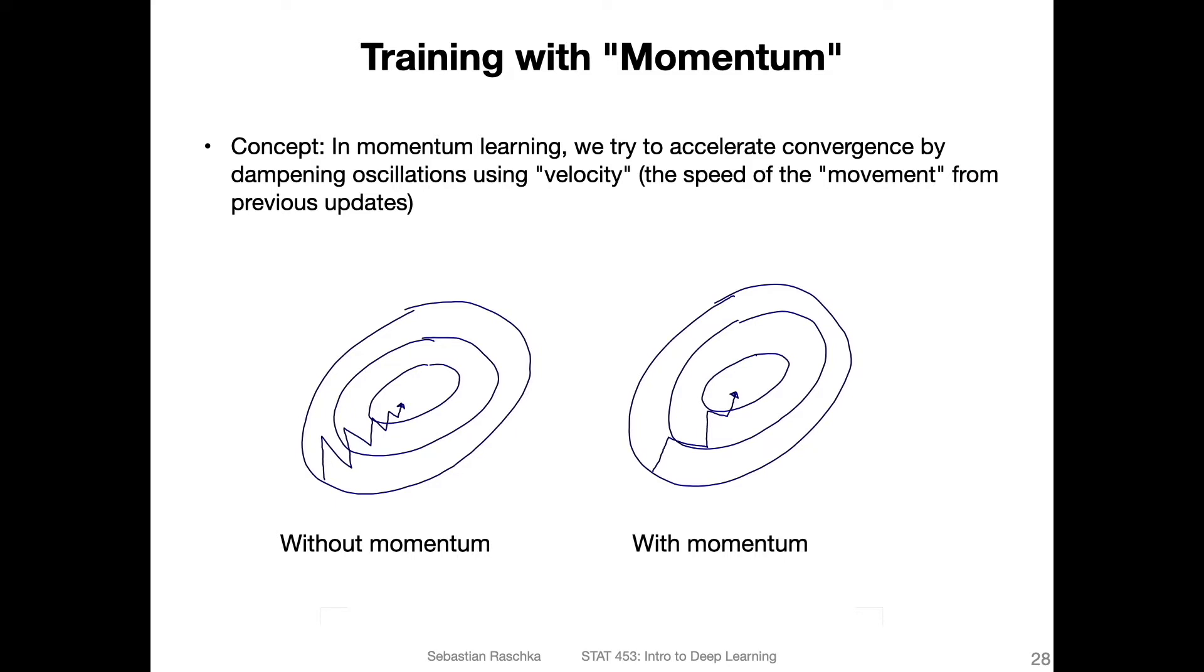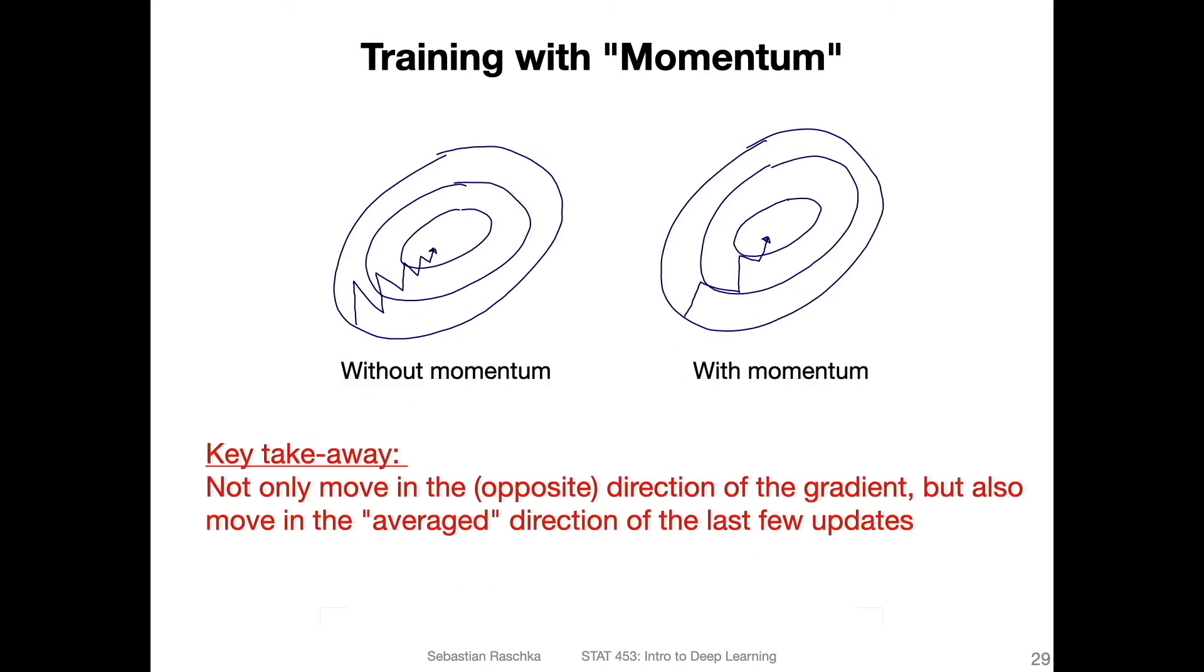Here's an illustration of how these oscillations are dampened. On the left hand side is a sketch of how your mini batch learning with SGD might look like where we have, due to the noise, this little zigzag. But you can see on average there's some force going into this direction. We can use this velocity to add this velocity to the updates to dampen out this oscillation such that the oscillations here are weakened, not as noisy as before, a little bit dampened.